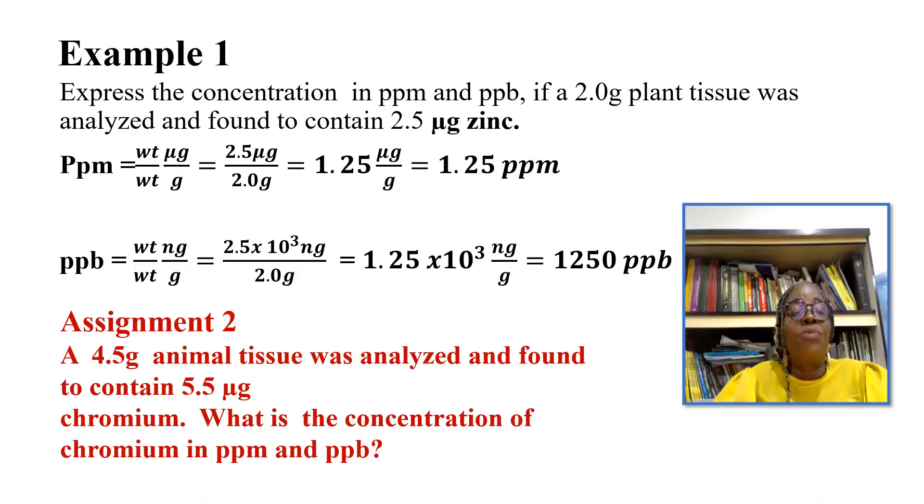For example one, we say express the concentration in parts per million and parts per billion. If a 2.0 gram plant tissue was analyzed and found to contain 2.5 micrograms zinc. In this question, we are told that the plant tissue contains 2.0 grams and that the concentration of zinc was 2.5 micrograms zinc.